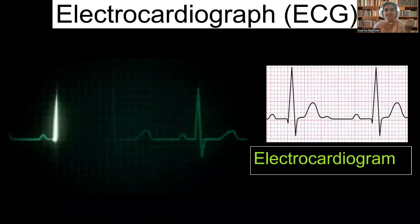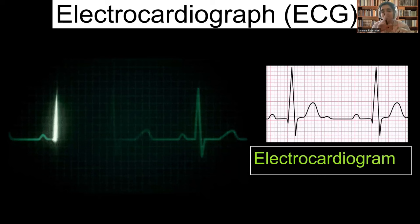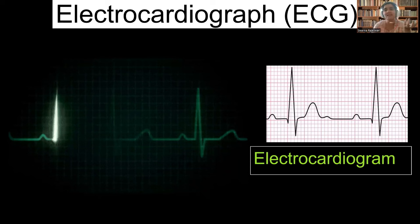So what is ECG? It is electrocardiogram — the machine which is used to get those recordings is the electrocardiogram, and the recording which is seen on the graph paper is also called electrocardiogram. Now let us define what is this electrocardiogram.